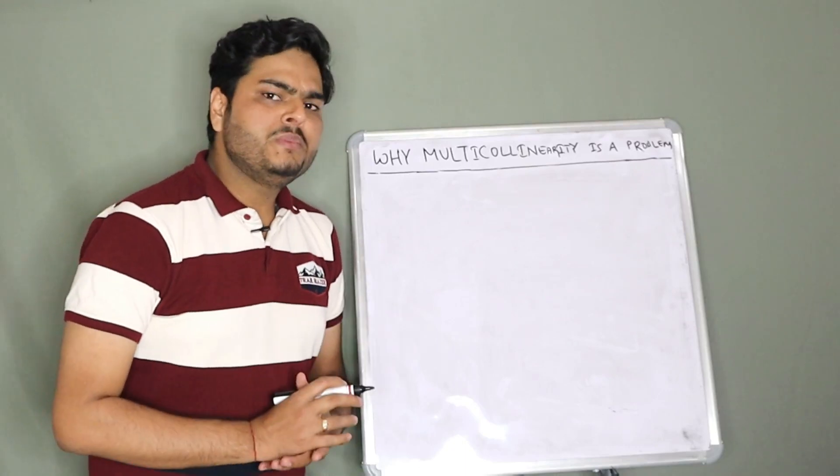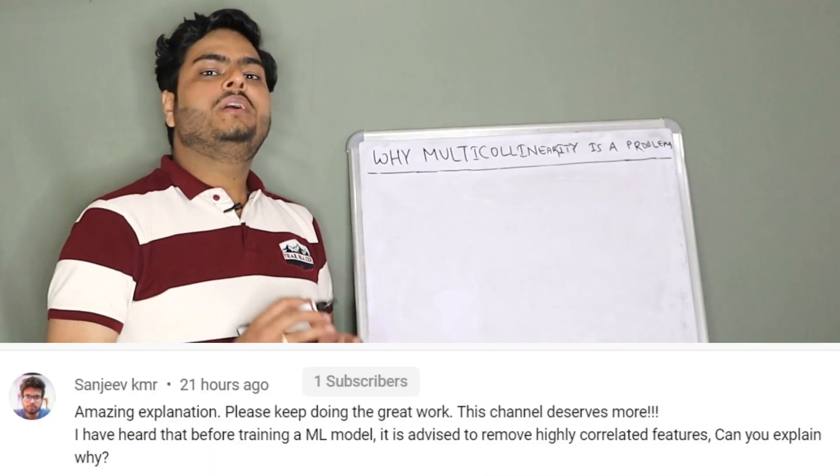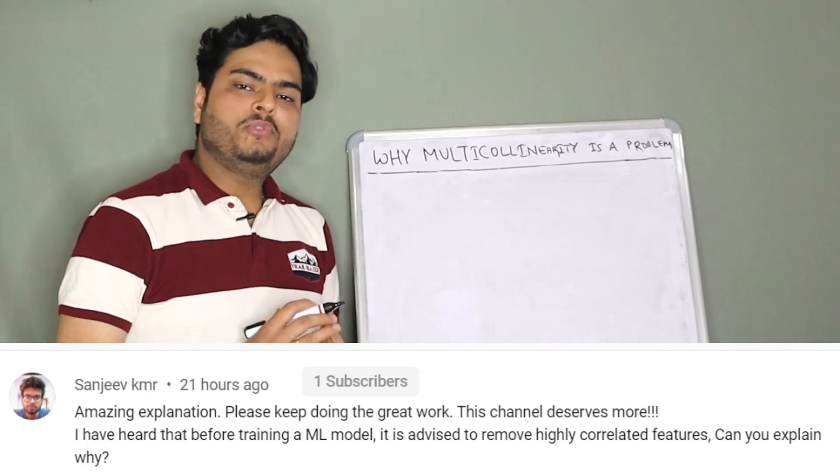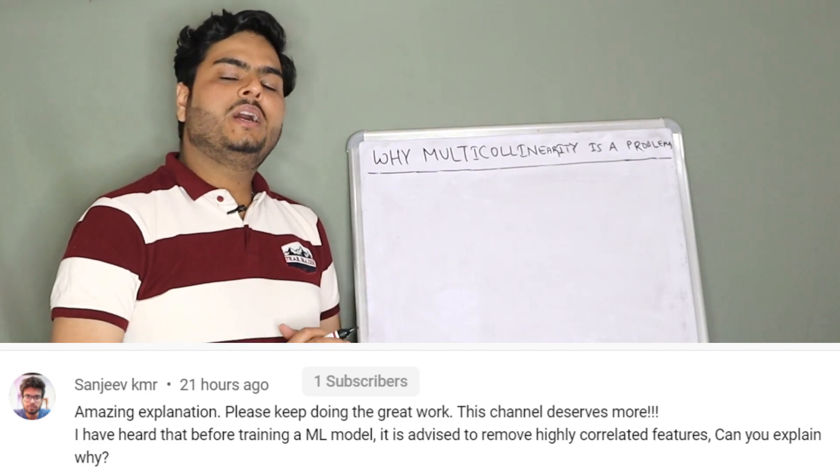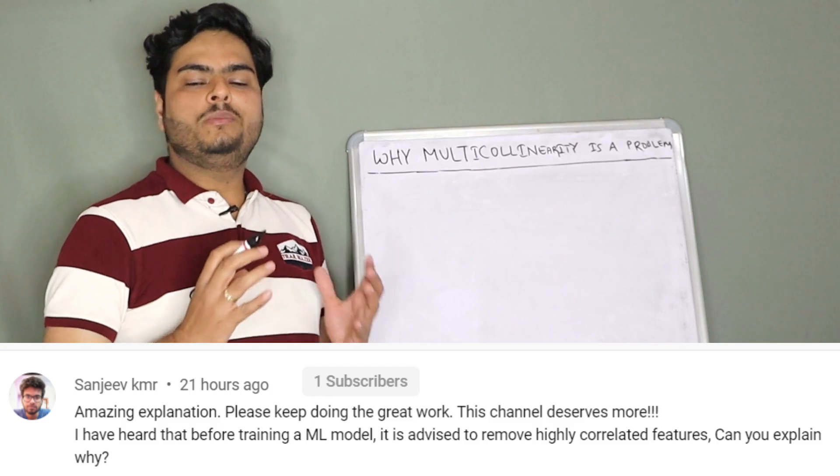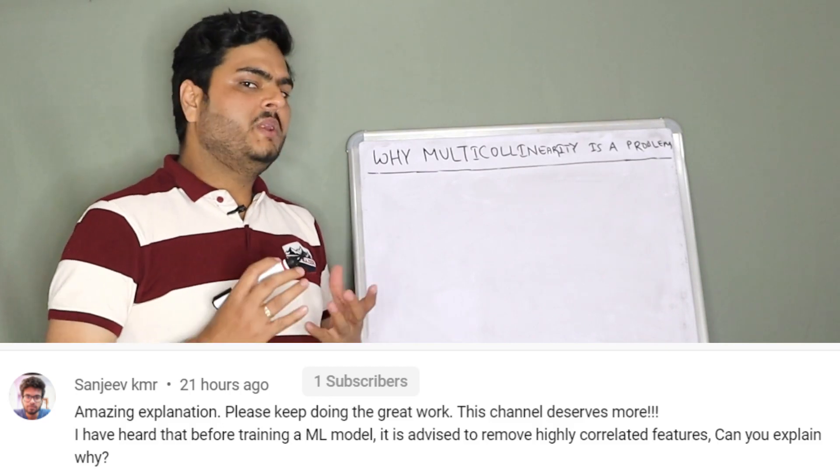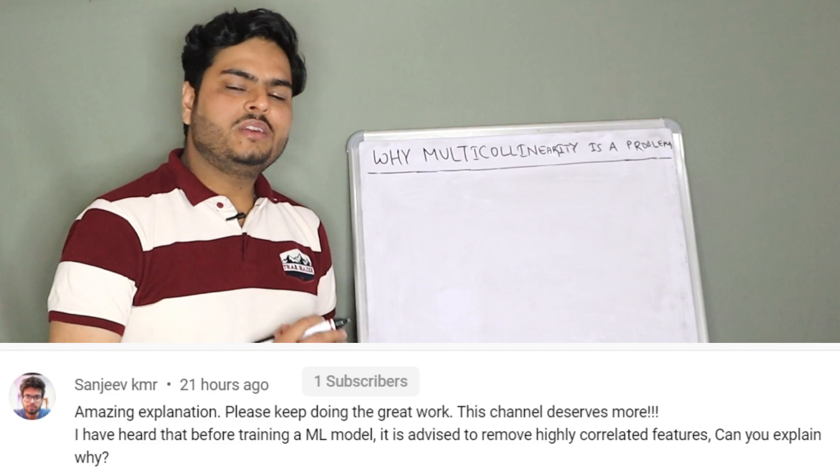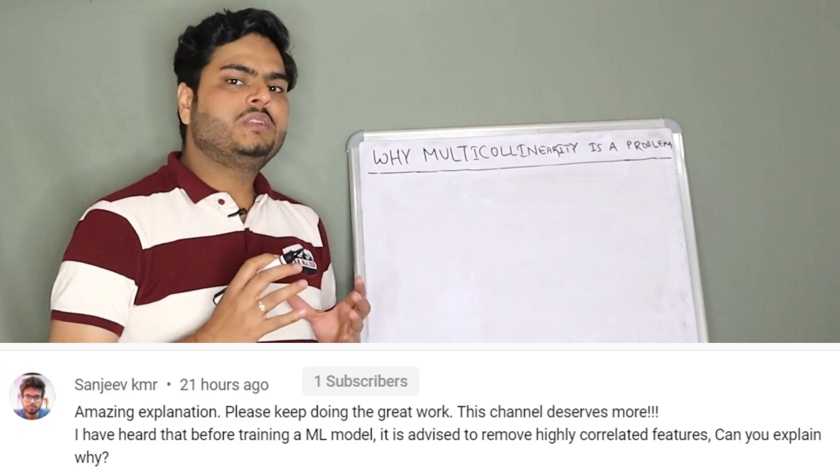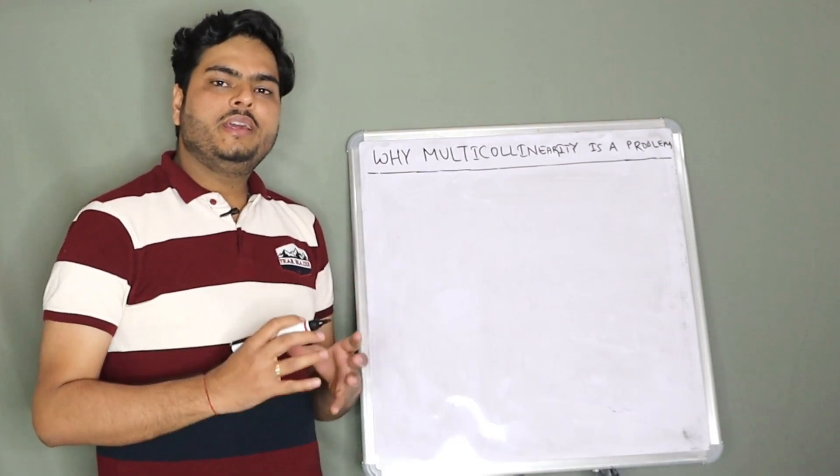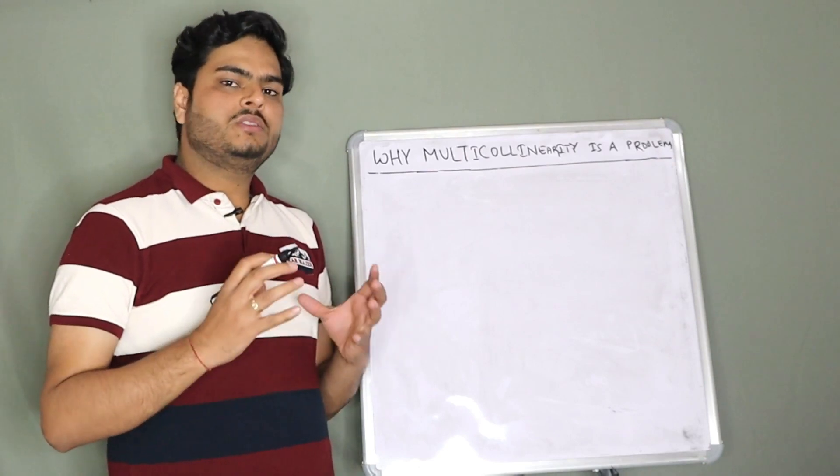So one of my subscribers, Mr. Sanjeev, is asking me: he has heard that before fitting a machine learning model, highly correlated features should be removed. Can I explain that? Thanks Mr. Sanjeev for asking this question, and today we will cover in detail the answer to this question.